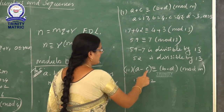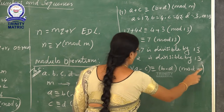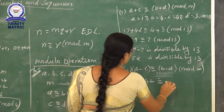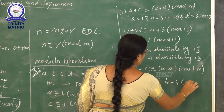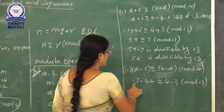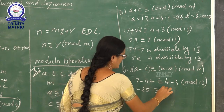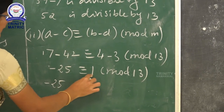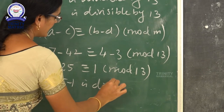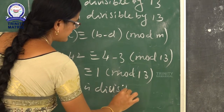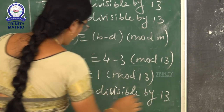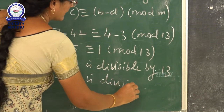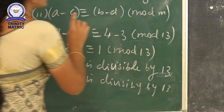The second condition is: A minus C congruent B minus D mod M. Applying the values: 17 minus 42 congruent 4 minus 3 mod 13, giving minus 25 congruent 1 mod 13. Now, minus 25 minus 1 equals minus 26, and minus 26 is divisible by 13. So the second condition is also satisfied.